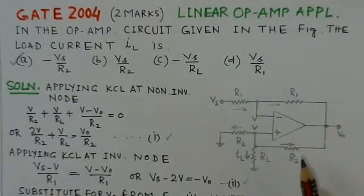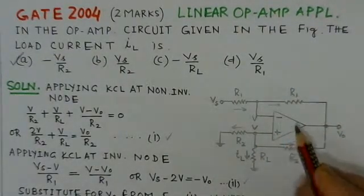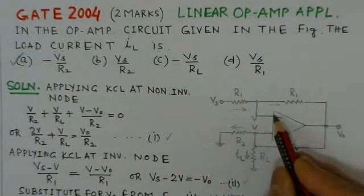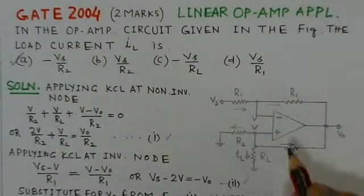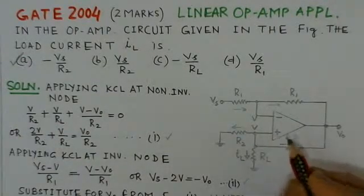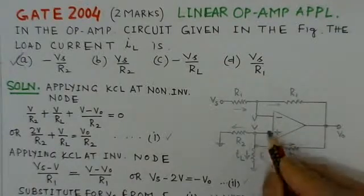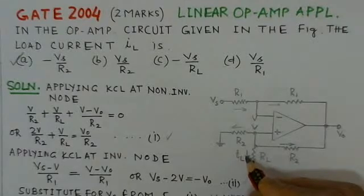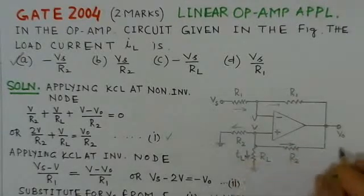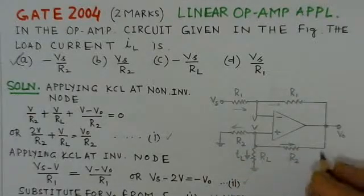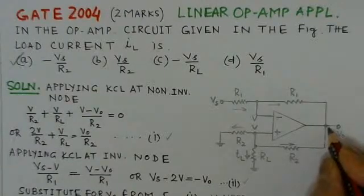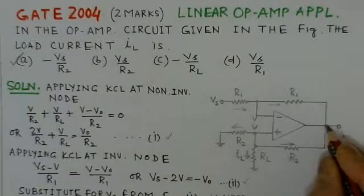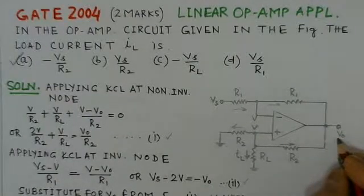The circuit is given here. This operational amplifier circuit is basically where the value of load current IL is to be determined. We presume that the voltage at the output is V0, taken up here as V0, for writing the KCL equations.